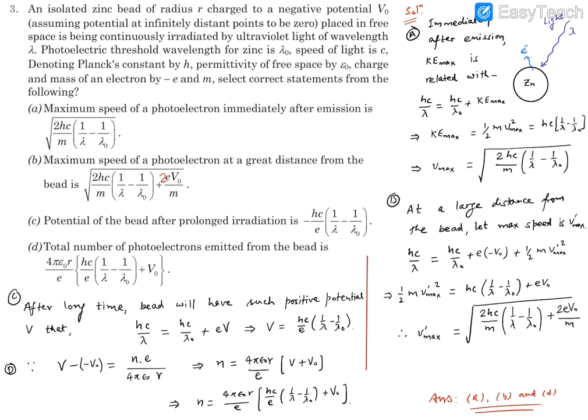Option C says potential of the bead after prolonged radiation. If we keep on doing this incident light on this, electrons will be ejected. This will be getting positively charged or lack of electrons. Initially it was having negative potential, negatively charged. All those negative charges have gone out. More negative charges are going, so positive charge is building up. Ultimately it will get some positive potential. Once the potential is such that even the emitted electron is not able to leave it, these photoelectrons will stop going outside. That will be the ultimate potential of this zinc bead.